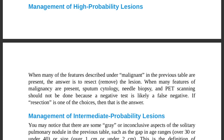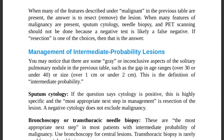For intermediate probability lesions, there are inconclusive aspects such as age between 30 and 40, size between one and two centimeters, and findings in between benign and malignant. This is the definition of intermediate probability — characteristics sitting between benign and malignant.